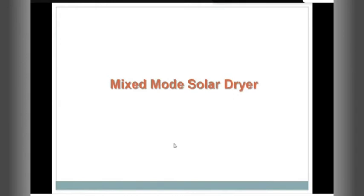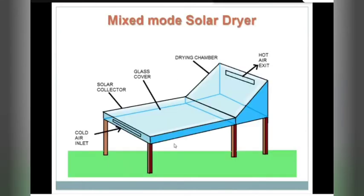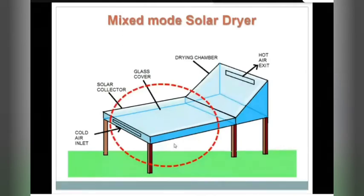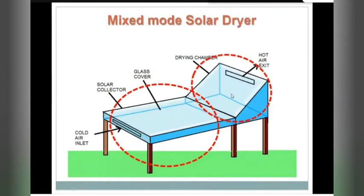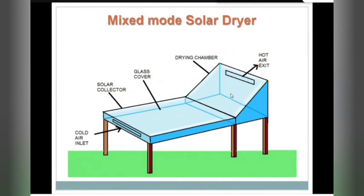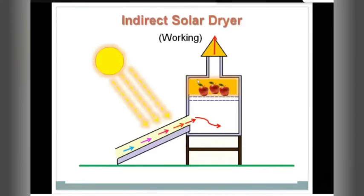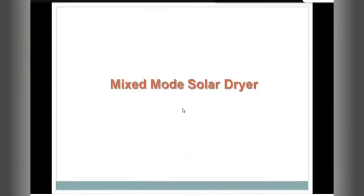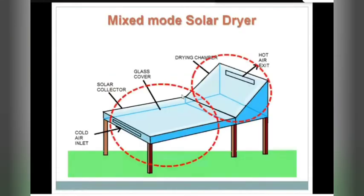This is the representation of a mixed mode solar dryer. It has a solar collector taken from the indirect solar dryer and a drying chamber taken from the direct solar dryer. The drying chamber here is made of glass, so if sun rays fall on it, they will have an effect on the produce — unlike the indirect solar dryer, where the drying box is fully heat insulated and sun rays falling on it have no effect on the produce inside.